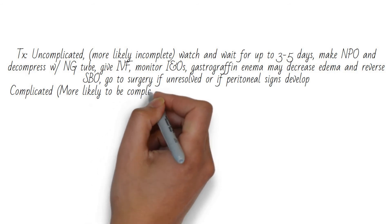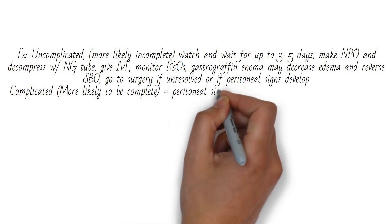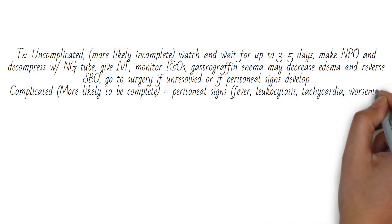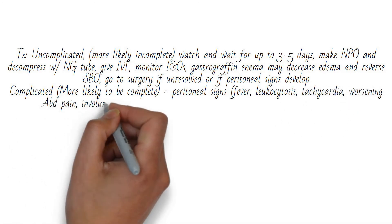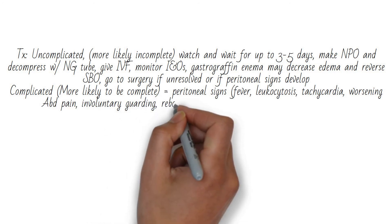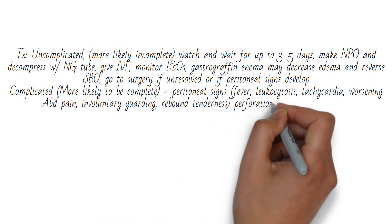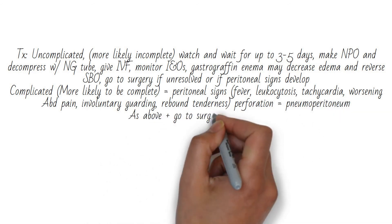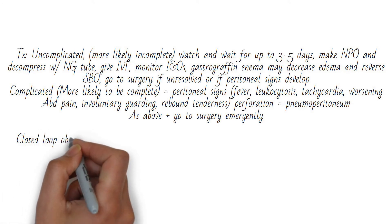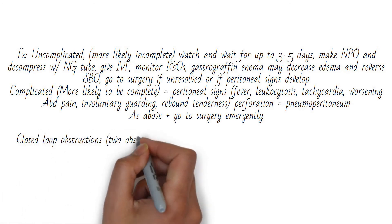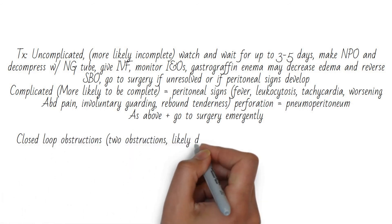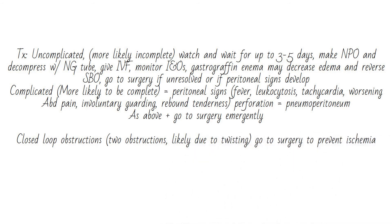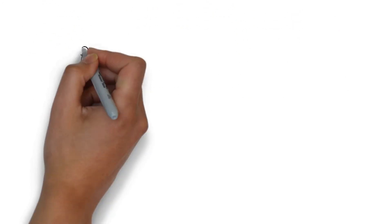Small bowel obstructions due to surgical adhesions are more likely to resolve spontaneously than in a virgin abdomen. Go to surgery if unresolved after three to five days, or if peritoneal signs develop — fever, leukocytosis, tachycardia, worsening abdominal pain, rebound tenderness, and involuntary guarding. Complicated mechanical obstructions get the same medical treatment but go to surgery emergently. Closed-loop obstructions, which appear as two obstruction points on CT, are likely due to volvulus and also go to surgery emergently.